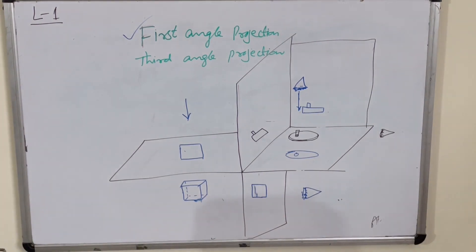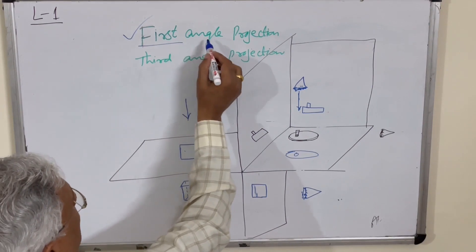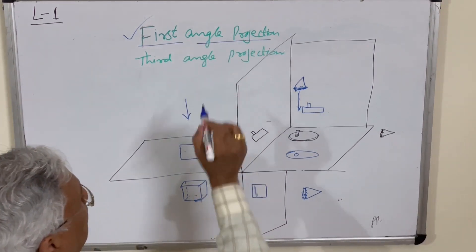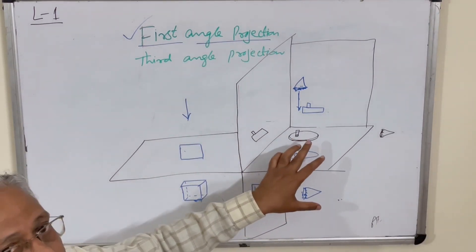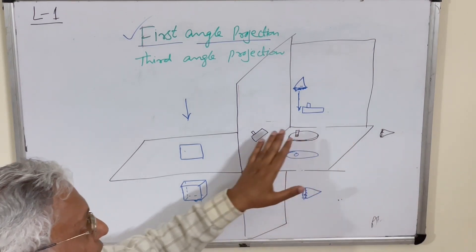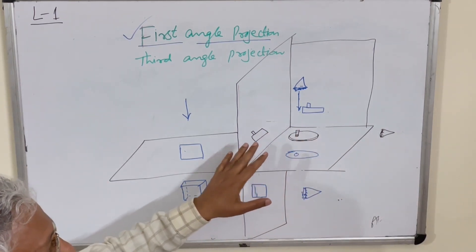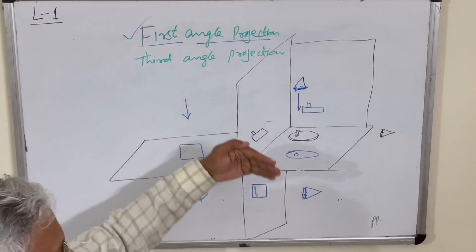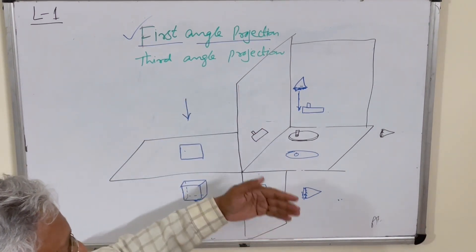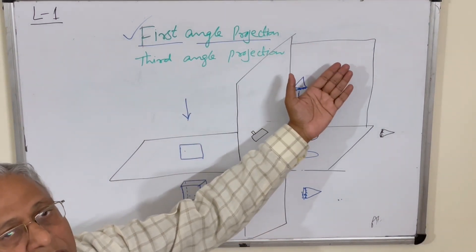In this course, we will discuss only the first angle projection. Therefore, the object will always be between the observer and the plane, and you get the projection on either the horizontal plane, vertical plane, or the third plane.